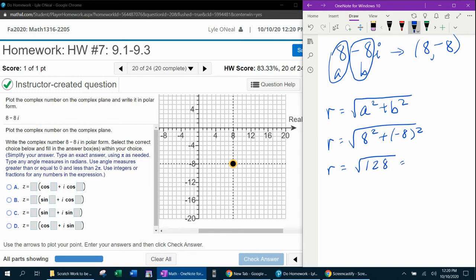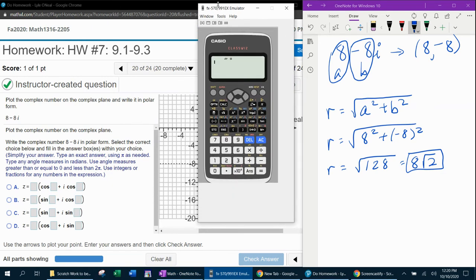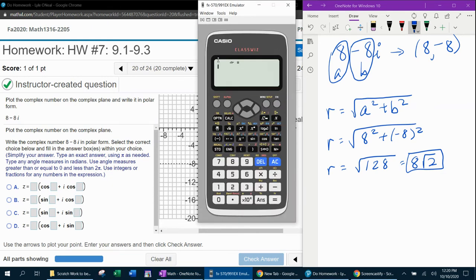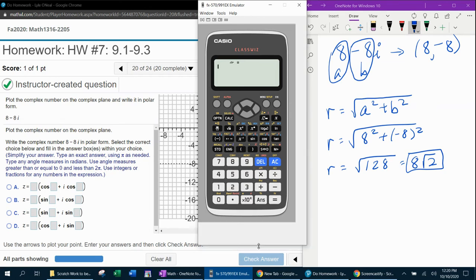And I believe that is going to simplify in simplest radical form as 8 square root of 2. And if you're not 100% sure about doing that manually, you can always do it electronically. So let's bring up our calculator big enough to where you can see it.